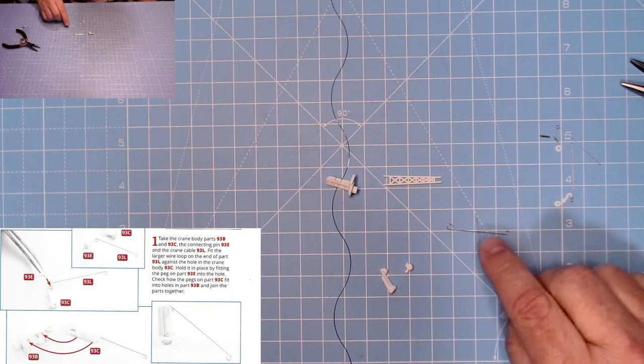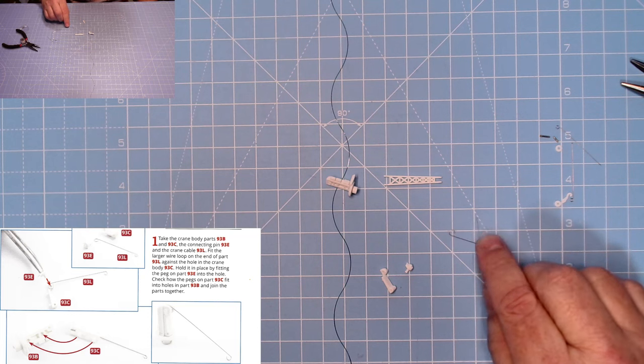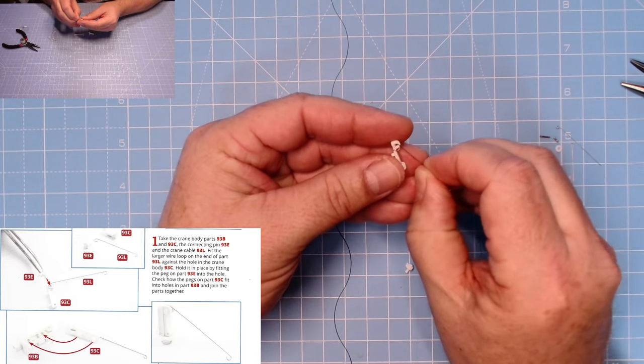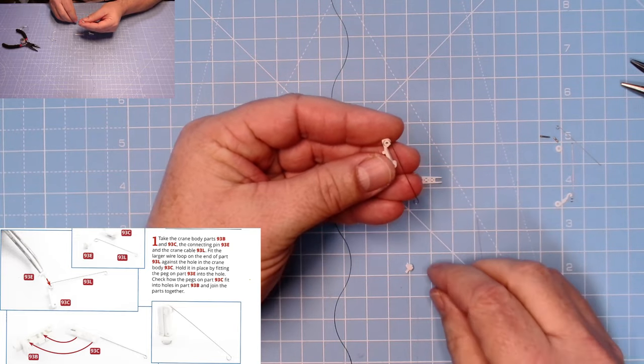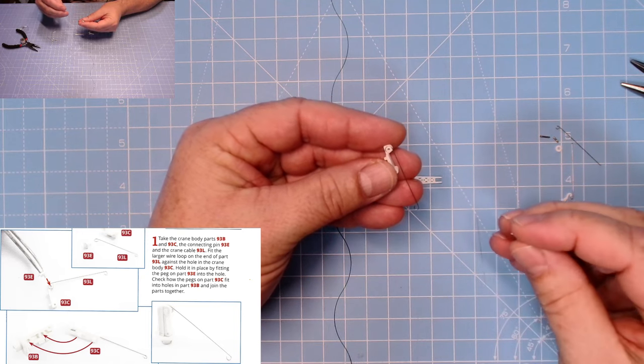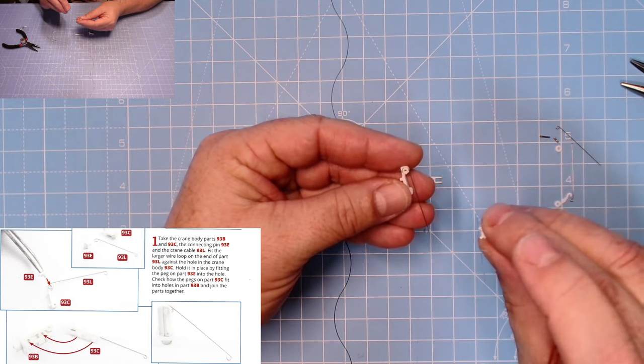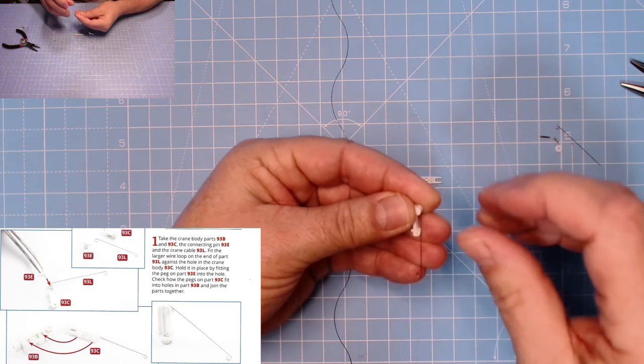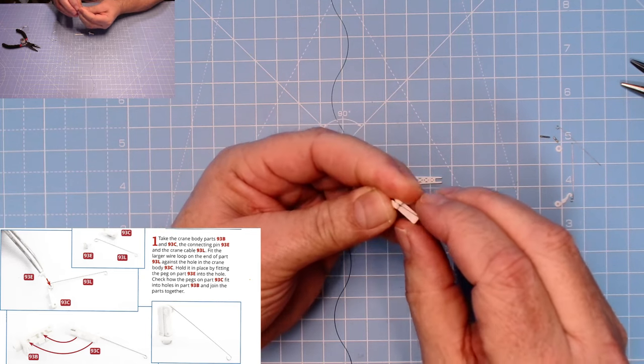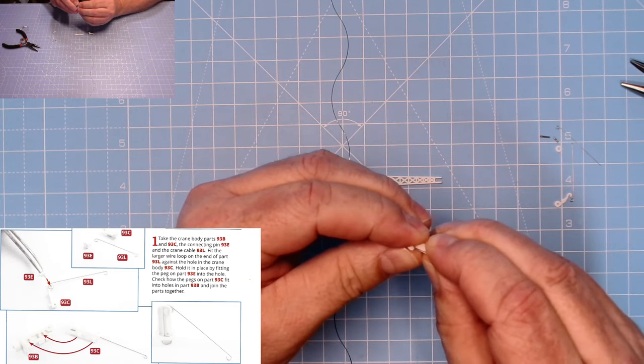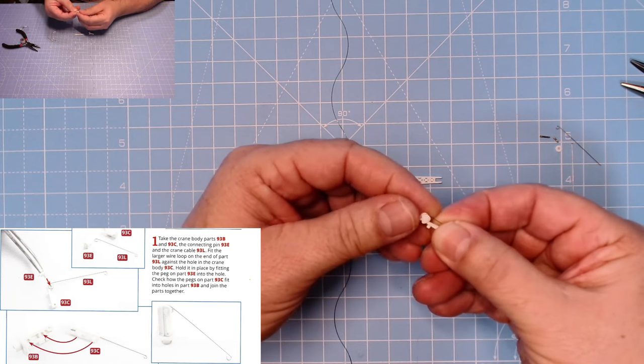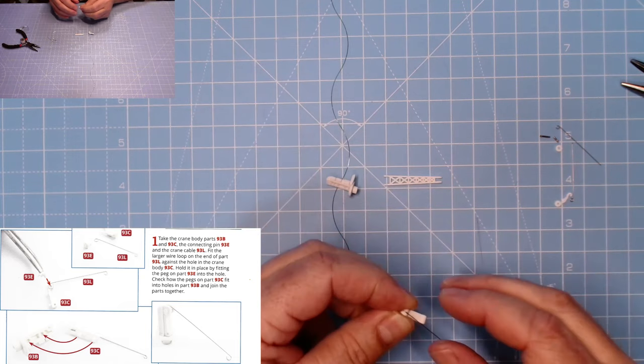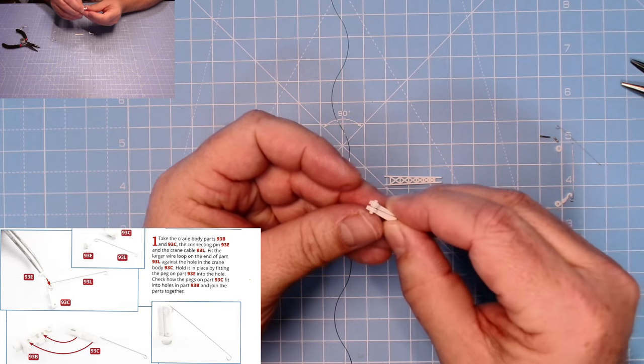So we need to separate all these because we don't need all of these just yet. We need these pieces: 93E which is this piece, 93C which is this, and 93L which is that piece there. Basically we take that, put that over there like that, and then we have to insert this into here, which it has done.